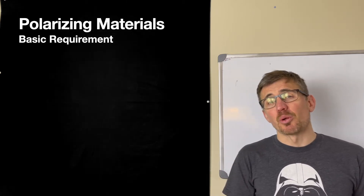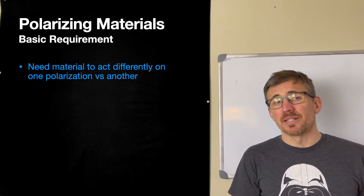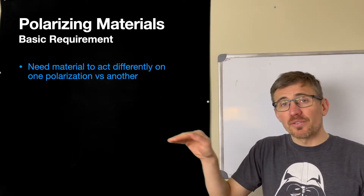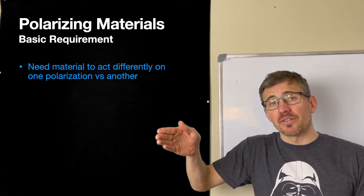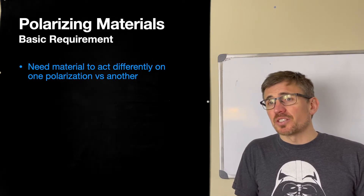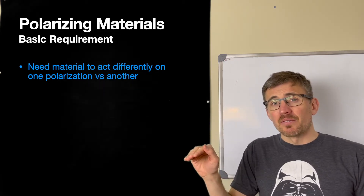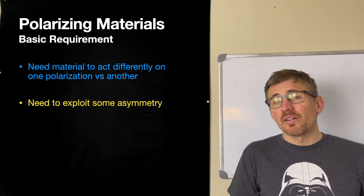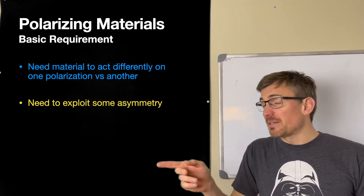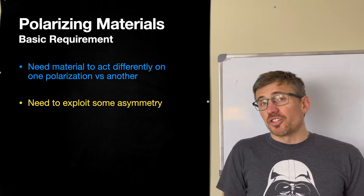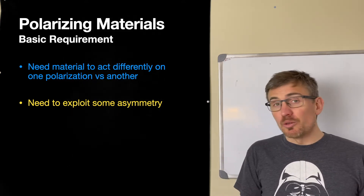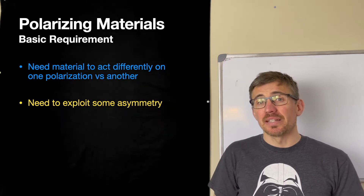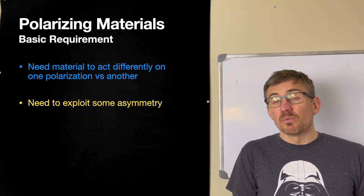Today we're going to look at the physical mechanism through which polarizing devices actually work. Let's think about what we need for a polarizing device. Effectively, if it's going to change the polarization, it must act differently on one polarization versus the other. We need something that looks optically different for electric fields wiggling along x than y — we need to exploit some asymmetry in materials. We'll look at both human-made engineered devices and things that occur naturally.